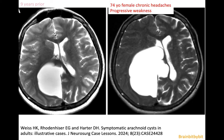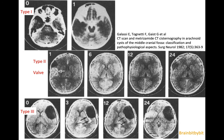Arachnoid cysts can also grow. For example, in this female in her 70s with chronic headaches and progressive left-sided weakness, you can see a very large arachnoid cyst in the right parietal region that was much larger than nine years before. The arachnoid cysts that grow are Galassi type 2 cysts.